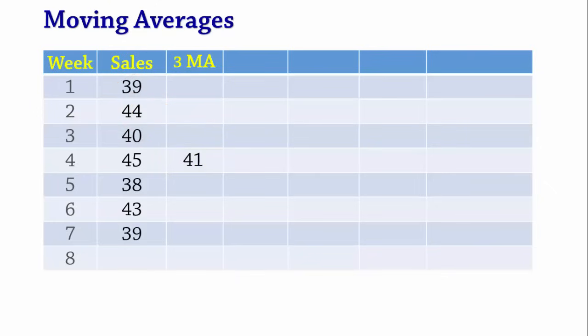Next, we average weeks 2, 3, and 4 sales to obtain the moving average forecast for week 5. That is, 44 plus 40 plus 45 divided by 3 which gives 43. For week 6, the moving average is from weeks 3, 4, and 5. That is, 40 plus 45 plus 38 divided by 3 which gives 41.